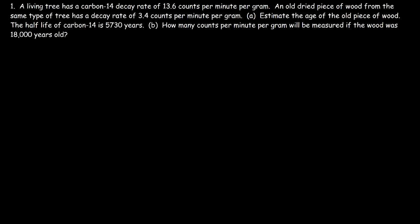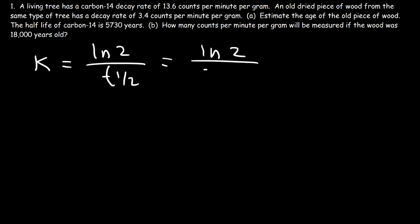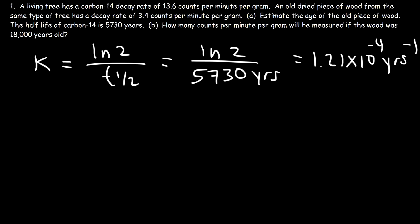Now let's focus on this problem. A living tree has a carbon-14 decay rate of 13.6 counts per minute per gram, and the dried piece of wood has a decay rate of 3.4 counts per minute per gram. To estimate the age of the old piece of wood, we first need to calculate the rate constant K. K equals the natural log of 2 divided by the half-life, so it's ln(2) divided by 5730 years, which equals 1.21 times 10 to the negative 4 years to the minus 1.